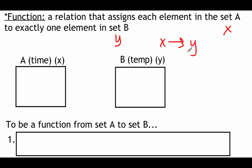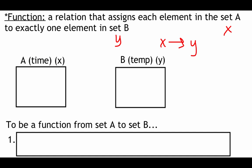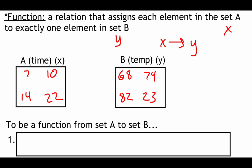To describe how we figure out if something is a function, I'll use the example of relating time to temperature. Say we went outside and measured the temperature at four different times: 7 o'clock, 10 o'clock, 14 (2 PM), and 22 (10 PM). At 7 o'clock we measured 68 degrees.